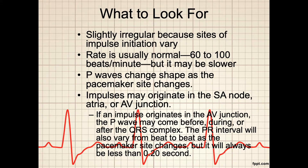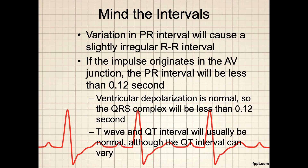The P-waves change shape as the pacemaker site changes. The impulses may originate in the SA node, the atria, or the AV junction. If an impulse originates in the AV junction, the P-wave may come before, during, or after the QRS complex. The R-to-R interval will also vary from beat-to-beat as the pacemaker site changes, but it will always be less than 0.20 seconds. Variation in the PR interval will cause a slightly irregular R-to-R interval. If the impulse originates in the AV junction, the PR interval will be less than 0.12 seconds. Ventricular depolarization is normal, so the QRS complex will be less than 0.12 seconds. The T-wave and the QT interval will usually be normal, although the QT interval can vary.